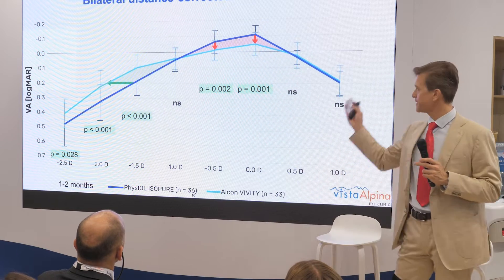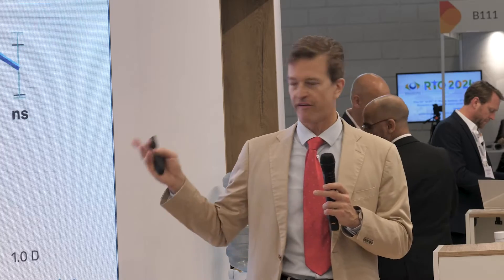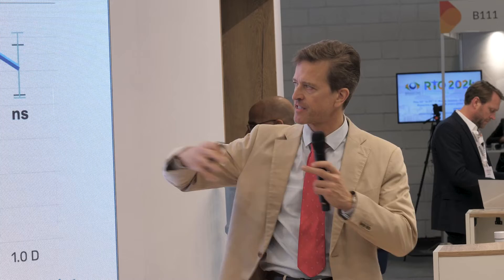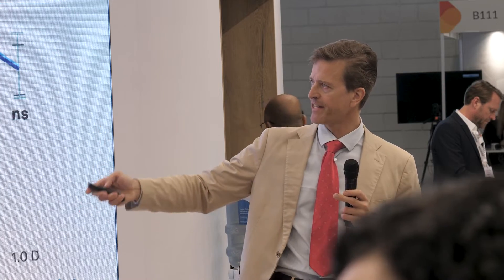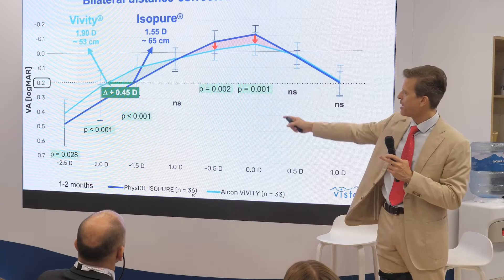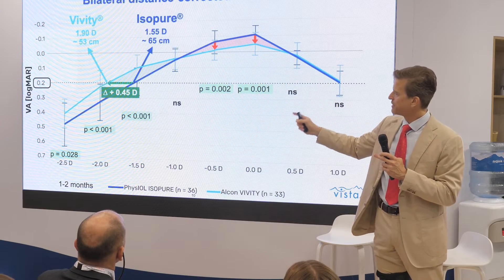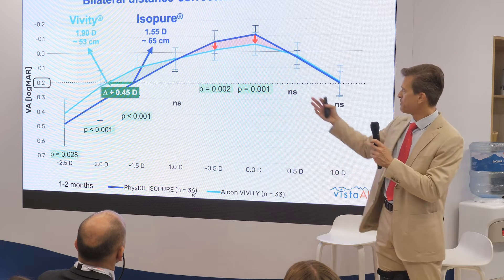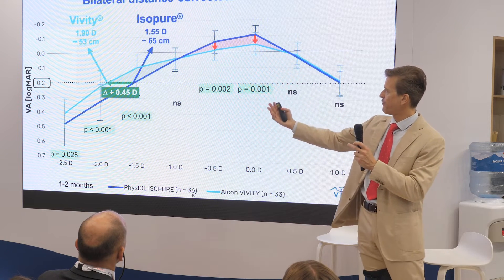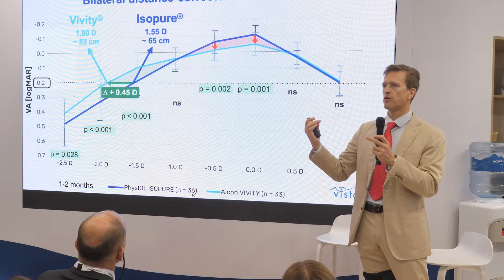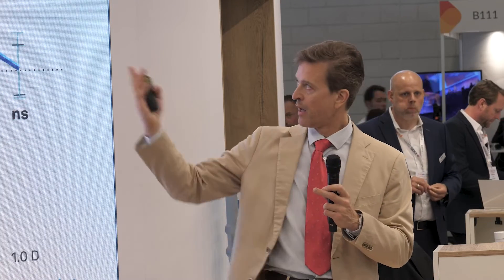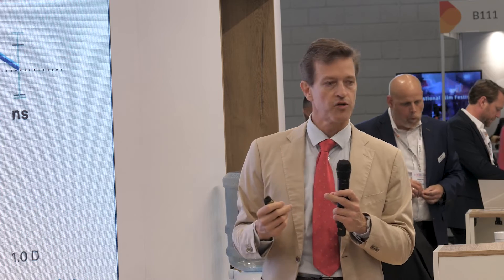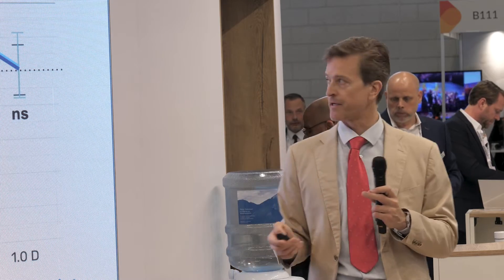Here is the defocus curve. As you can see, in light blue for vivity, the defocus curve is somewhat broader. At the level of 0.2 logMAR, vivity has 0.45 diopters more of defocus range, meaning vivity brings functional vision up to 53 centimeters, compared with isopure at 65 centimeters.